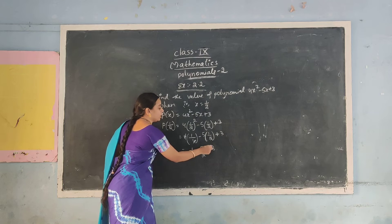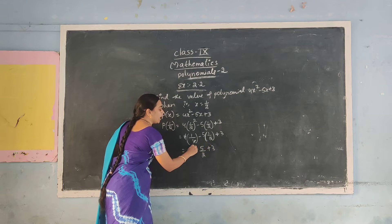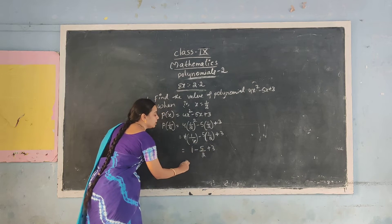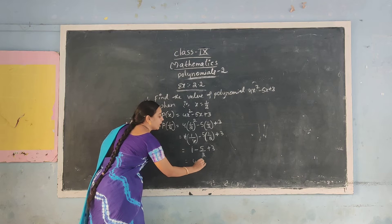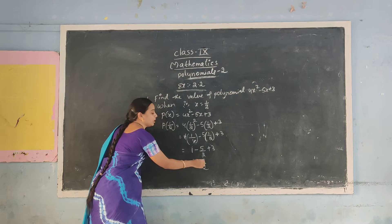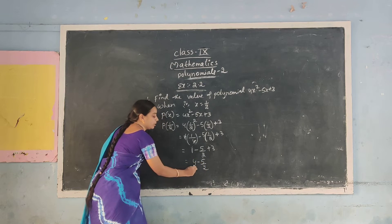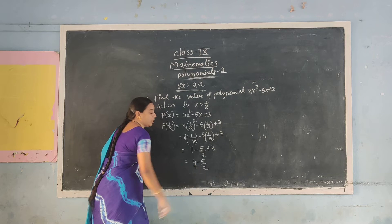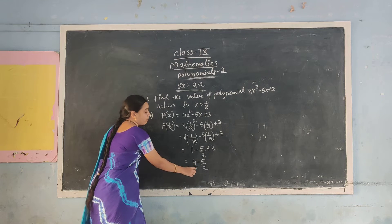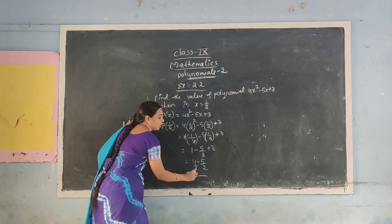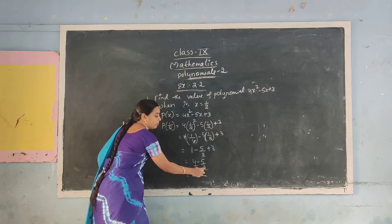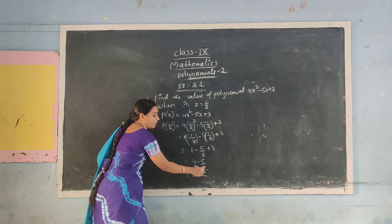Here we have 1 and 3. First of all add these two numbers: 1 plus 3 is 4, minus 5 by 2. This is a whole number and this is a fraction, so to subtract them we need a common denominator. The denominators 1 and 2 are different, so multiply them: 1 times 2 equals 2.